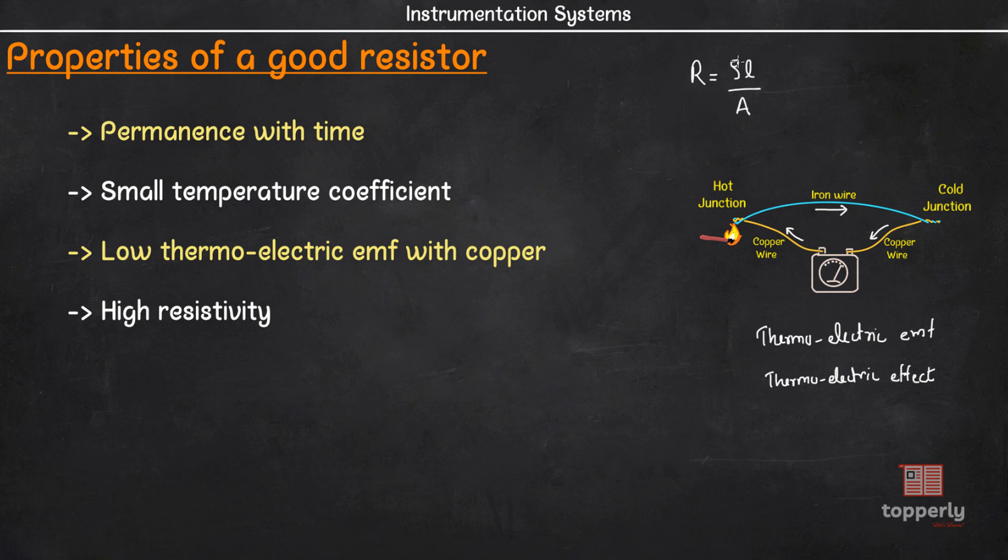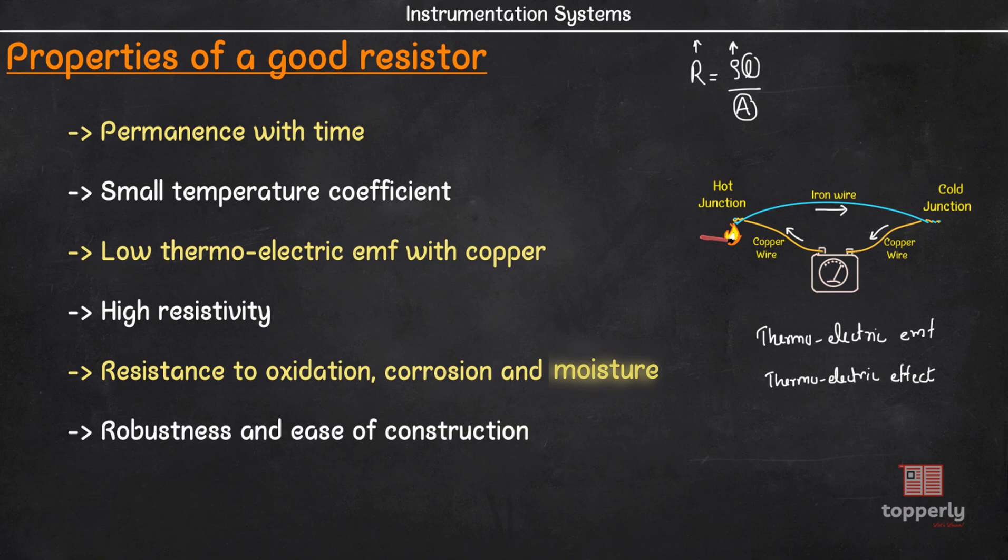Next a resistor should have high resistivity. We know the equation R equal to Rho L by A where Rho is called resistivity. So as you can see, if the value of Rho is high, then R is also high even if the value of L and A are small. Therefore, high resistivity is required to make the size of resistors small. Now, the material we use to make resistors should have resistance to oxidation, corrosion and moisture. And finally, resistors should have a robust and easy construction and should be cheap.